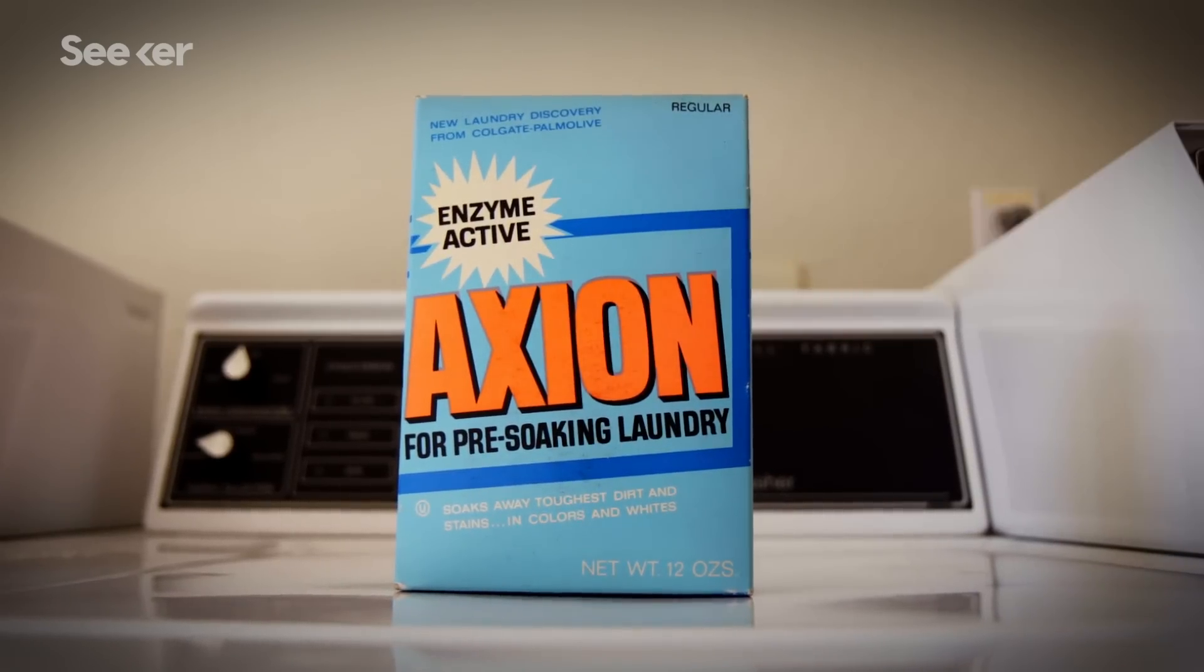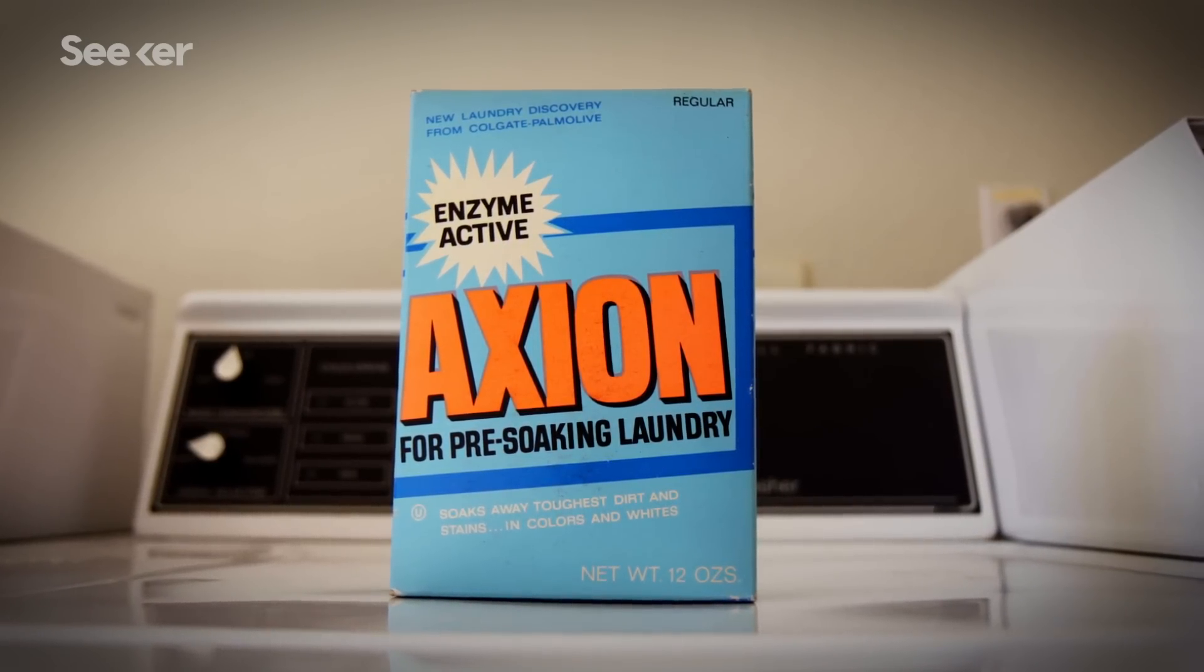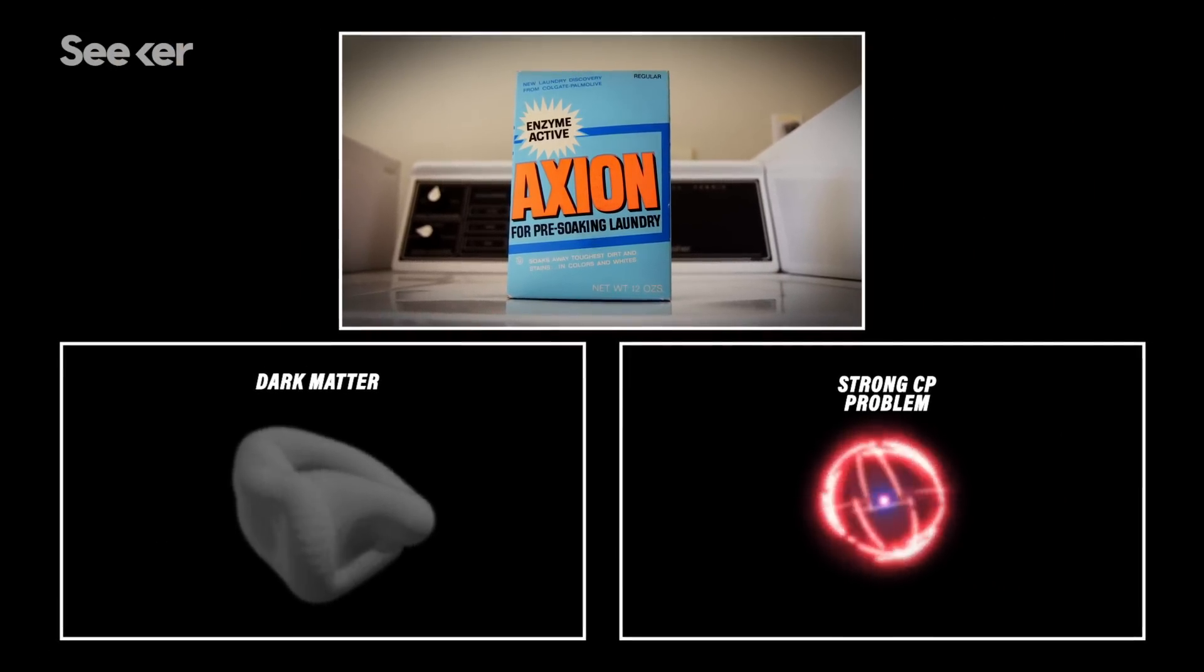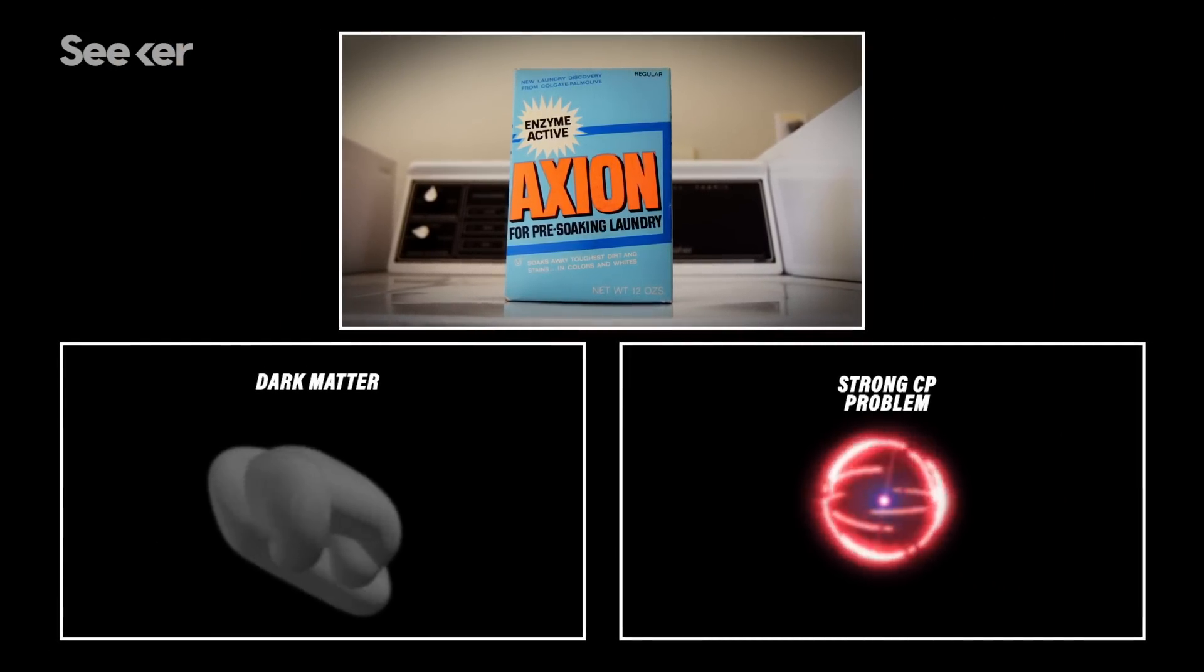And the star of this episode that's getting this big experimental push is called the axion. This theoretical particle was named after laundry detergent in the 1970s because it could clean up two big problems in physics.